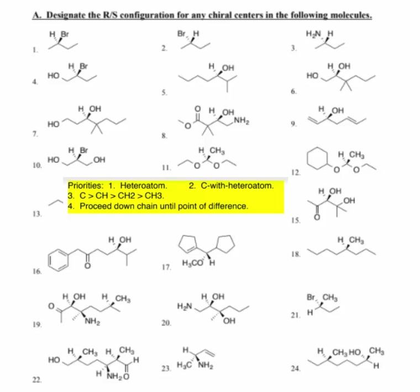We're going to work a lot of examples for this because it takes practice. For number one, this is a 2-bromobutane. So my CIP priority: bromine is number one — it is a heteroatom. Remember, there is a carbon at every end and bend. So this is a CH2, this is a CH3, and this is a CH3.